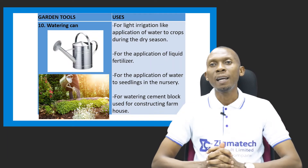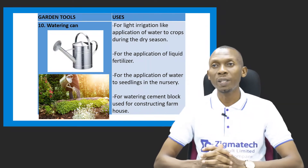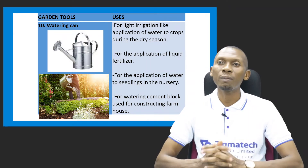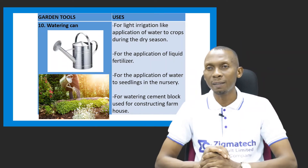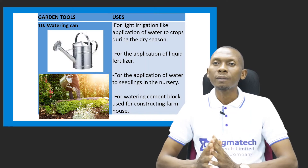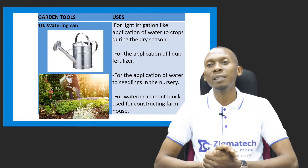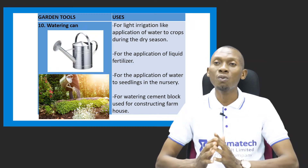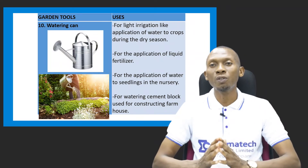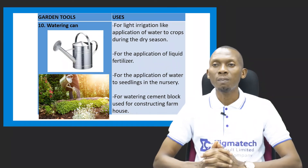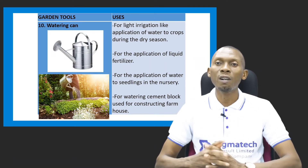We have the watering can. From the name, you should know it is used for applying water, which is also called irrigation. The watering can can be used for light irrigation — applying water to crops during the dry season. It can also be used for application of liquid fertilizers, for watering seedlings in nurseries, and for watering cement blocks during construction of farm buildings.